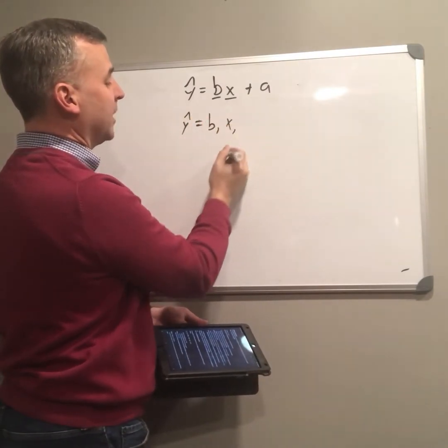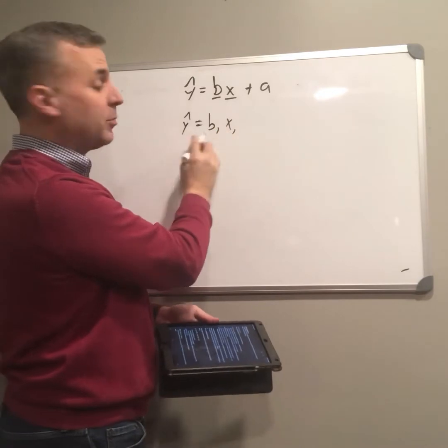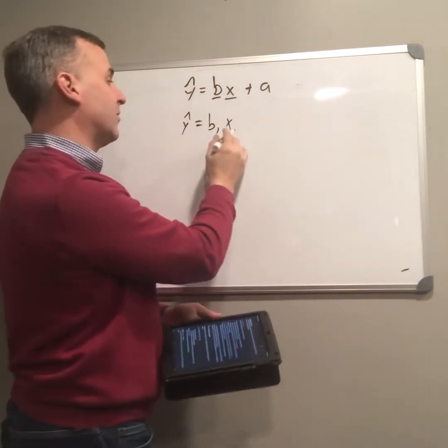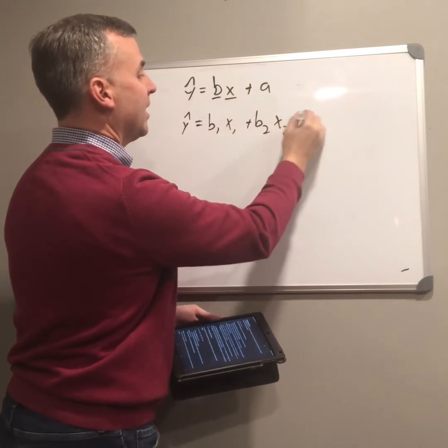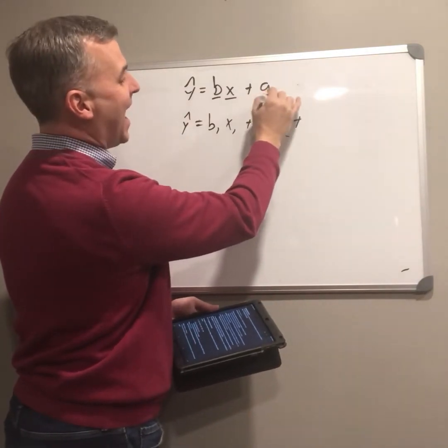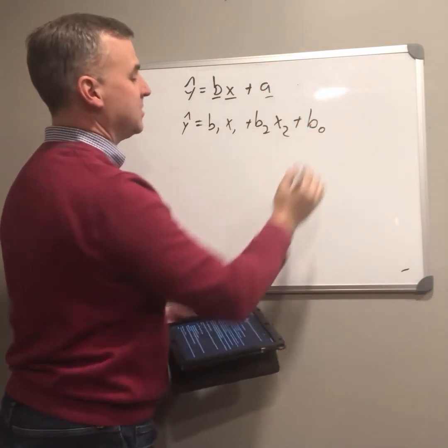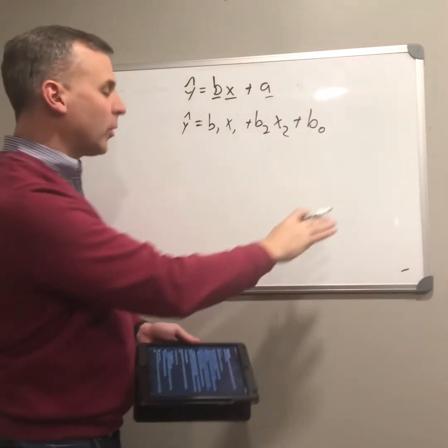So b1 is the first predictor, or x1 is the first predictor, b1 is the coefficient associated with the first predictor, b2, x2. Plus, instead of a, we're now going to use b sub 0.